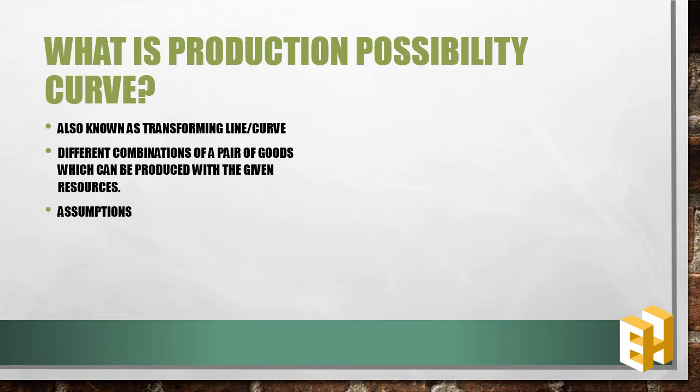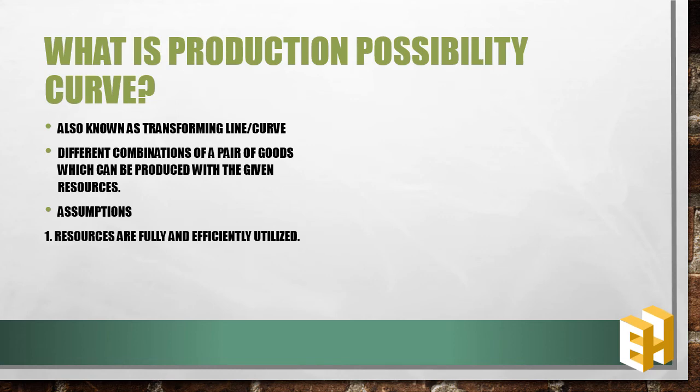There are certain assumptions while formulating the production possibility curve. First, resources are fully and efficiently utilized. And second, the technique of production remains constant.